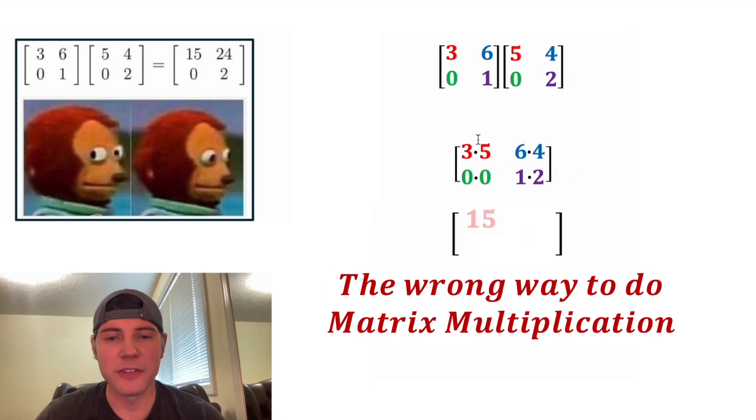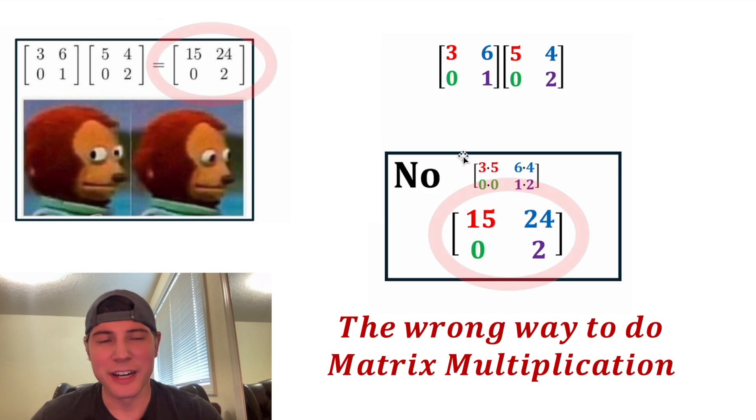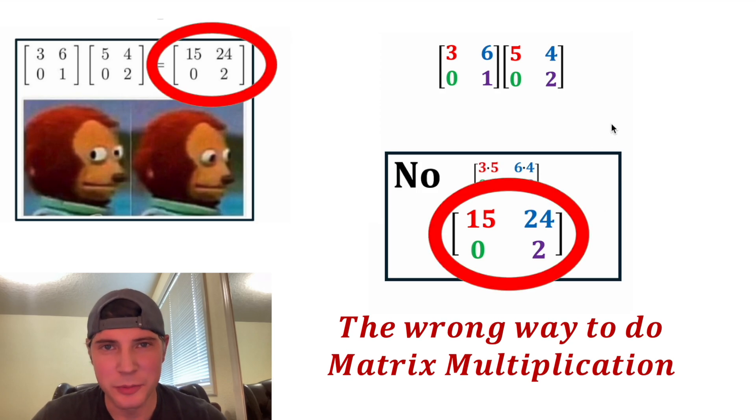And then from here, 3 times 5 is 15, 6 times 4 is 24, 0 times 0 is 0, and 1 times 2 is 2. And this is not correct. This is the wrong way to do matrix multiplication.